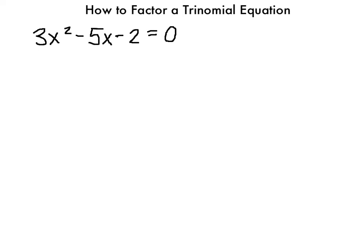Here's an example of how to factor a trinomial equation. We have an equation in the form ax squared plus bx plus c equals 0. We're going to factor this using the X-factor method, and then use the zero product property to figure out what x is. Whenever we have an equation, it has to equal 0 in order for it to work.